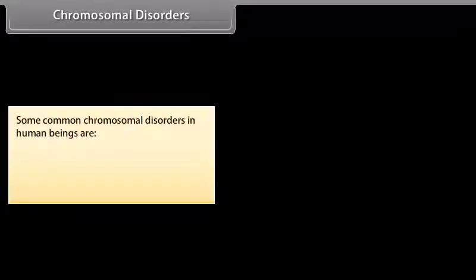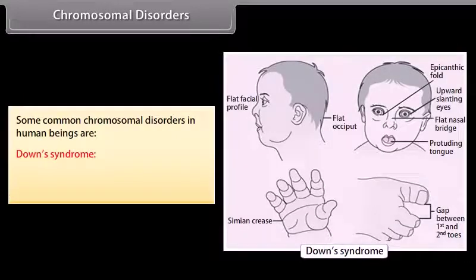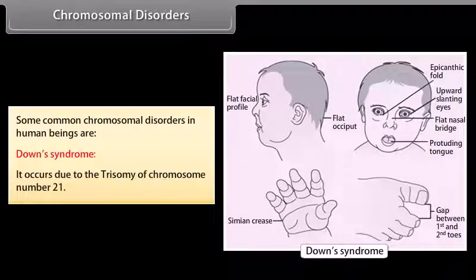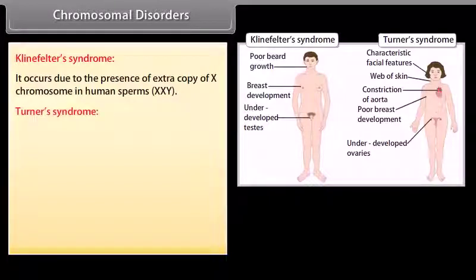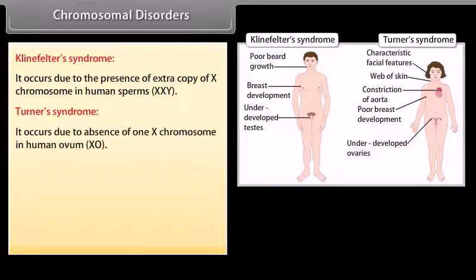Some common chromosomal disorders in human beings are: Down's syndrome, which occurs due to trisomy of chromosome number 21; Klinefelter's syndrome, which occurs due to the presence of an extra copy of X chromosome (XXY); and Turner's syndrome, which occurs due to the absence of one X chromosome (XO).